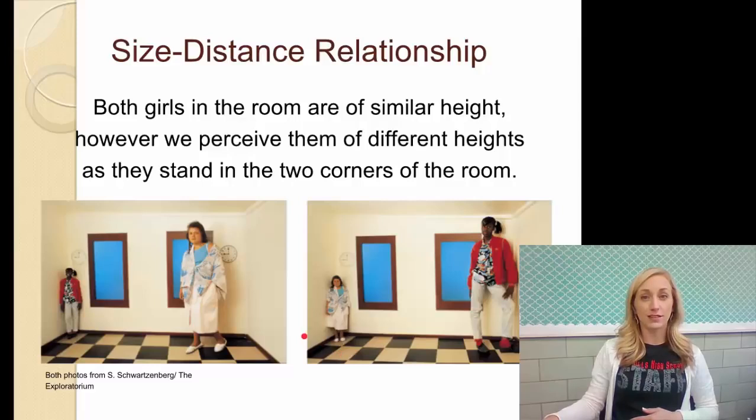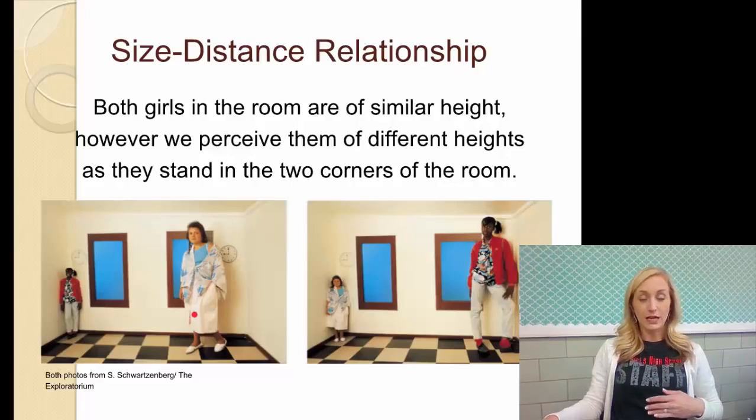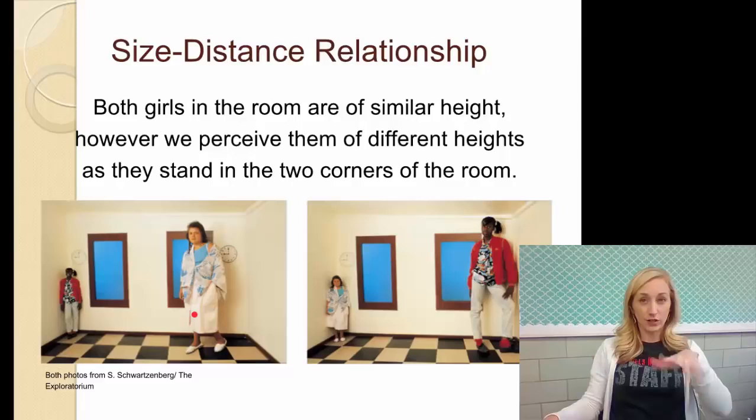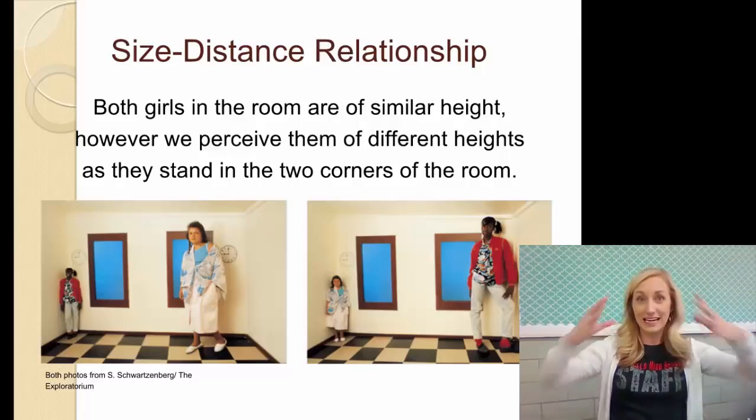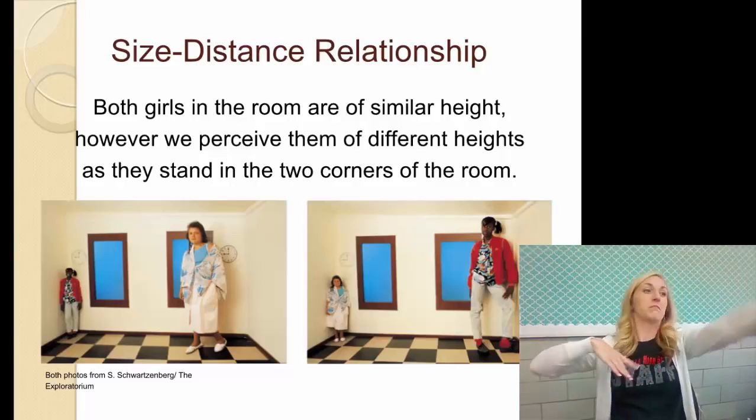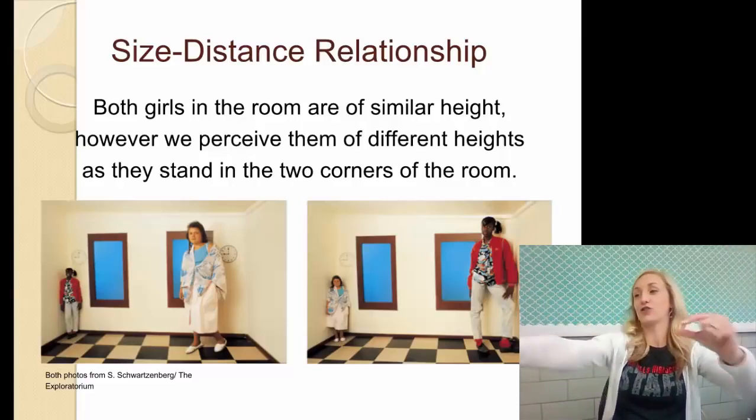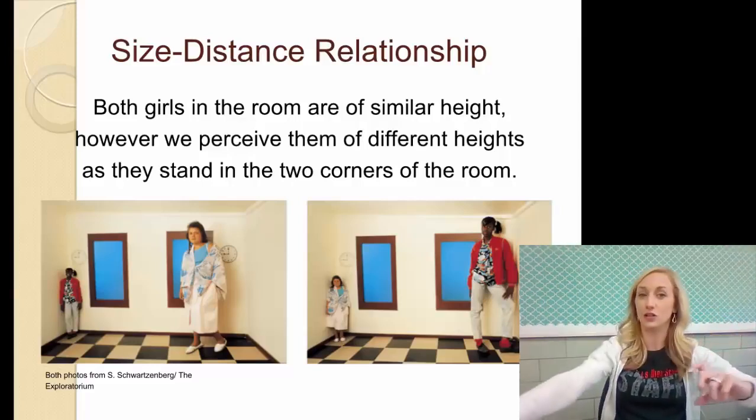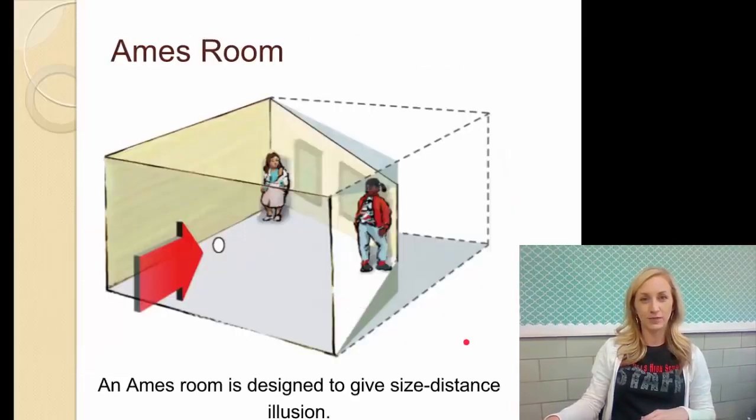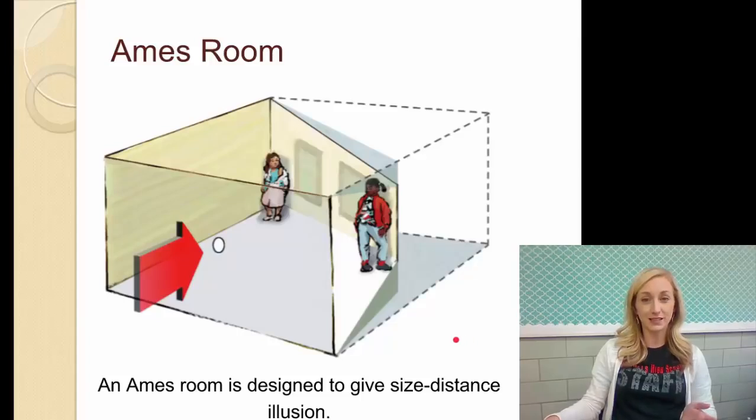Both girls in the room are of similar height. These two ladies are the same height. However, we perceive them as different heights as they stand in the two corners of the room. The entertainment junction up in, like, Westchester Mason area has one of these rooms. It's pretty cool looking. You actually are in it and see it live, not just in a picture. Like, your mom and your sister are in two different corners, and your mom looks itty-bitty as your sister is huge. It's kind of a cool illusion. It's called the Ames room. So an Ames room is designed to give size distance illusions, and this is kind of how it's built.